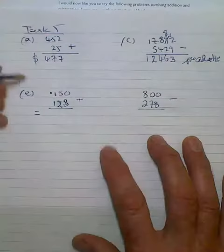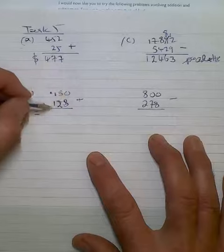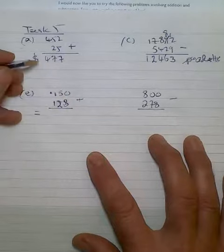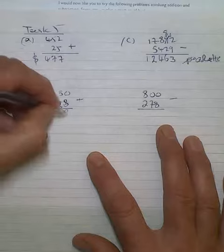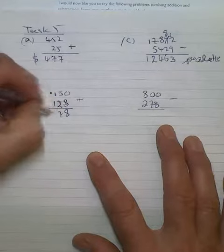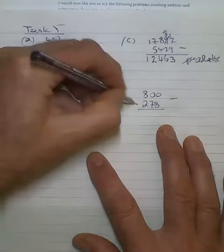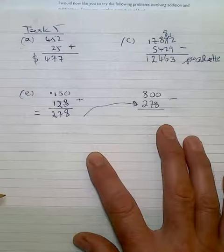In part B you've got 150 and 128 that obviously comes from the 800. So set this up as an addition and then carry that figure through for the subtraction in the second part.